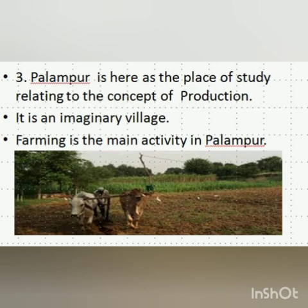Ramgunj is a big village 3 kilometers from Palampur, and an all-weather road connects Palampur to Ramgunj. Moreover, these roads are connected to the nearest town of Shahpur. So Palampur is well connected to the big village Ramgunj and to the town of Shahpur.